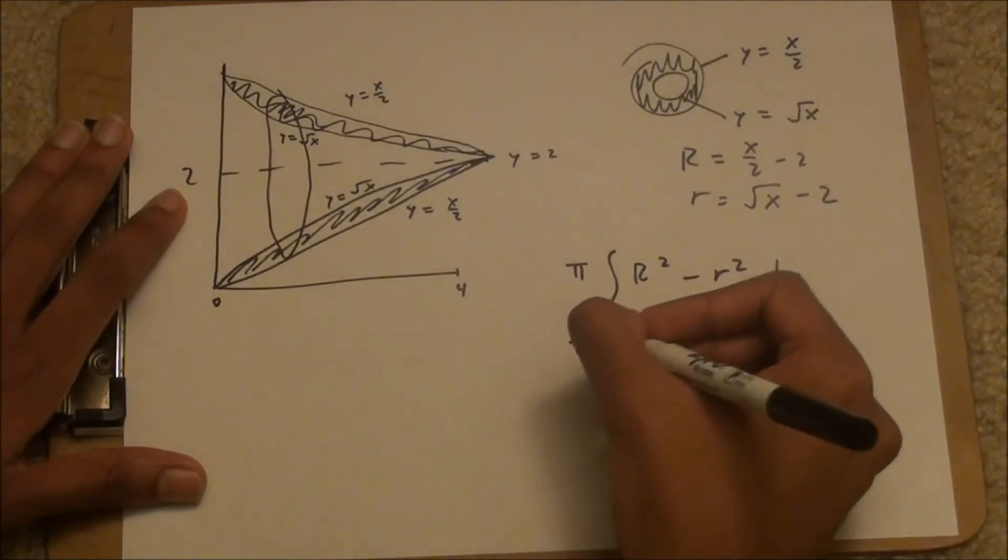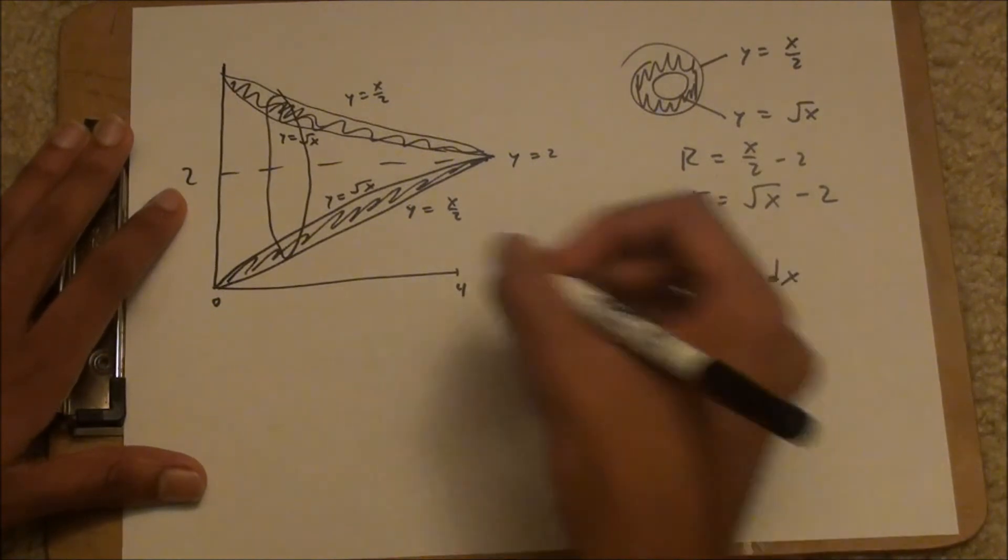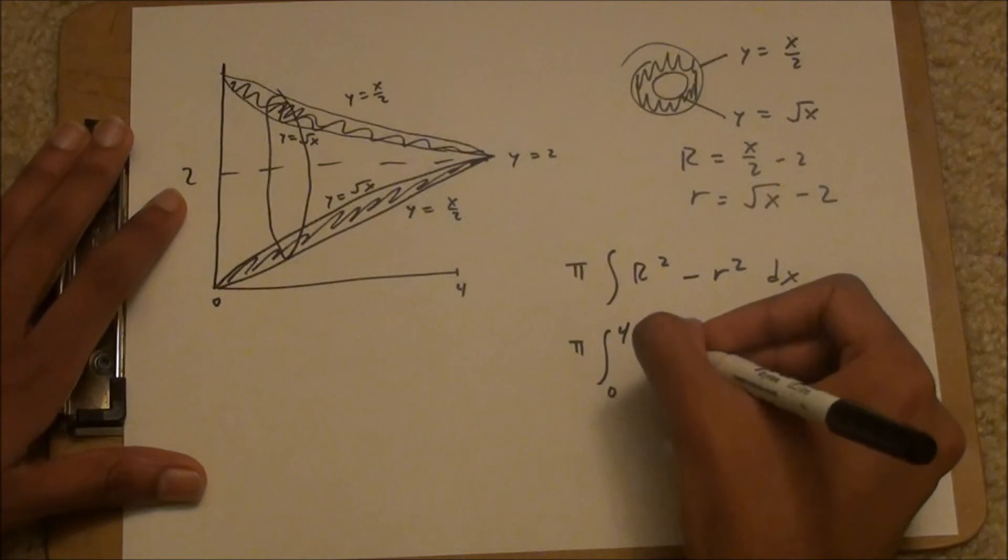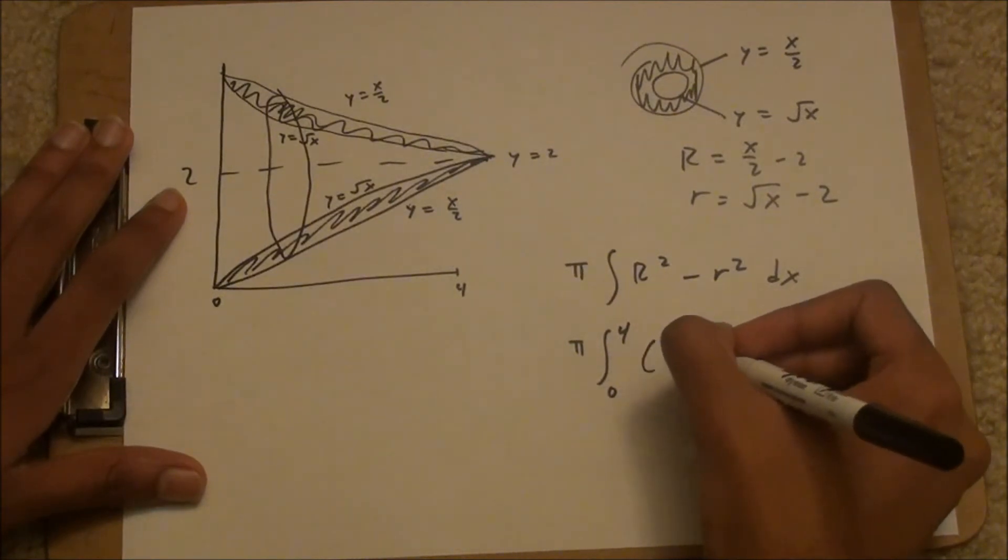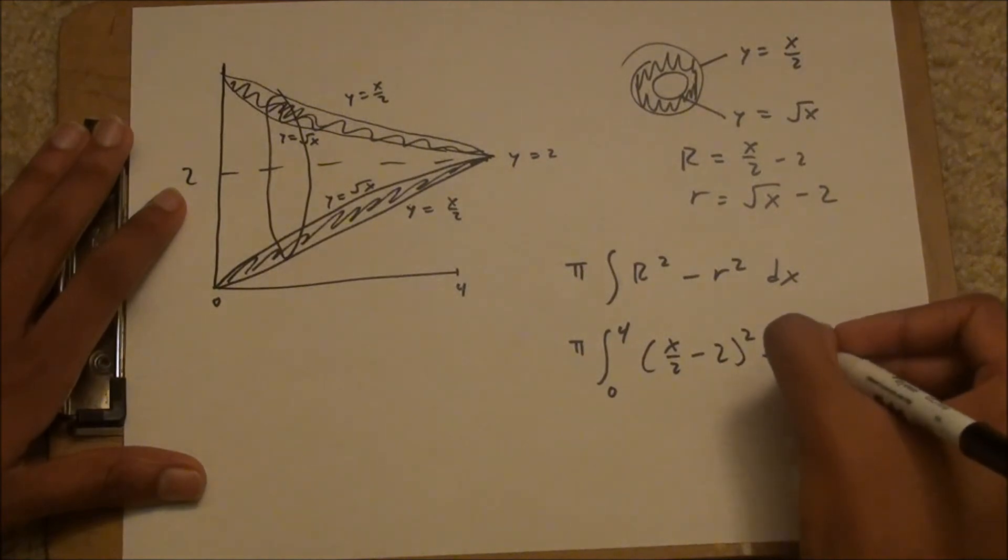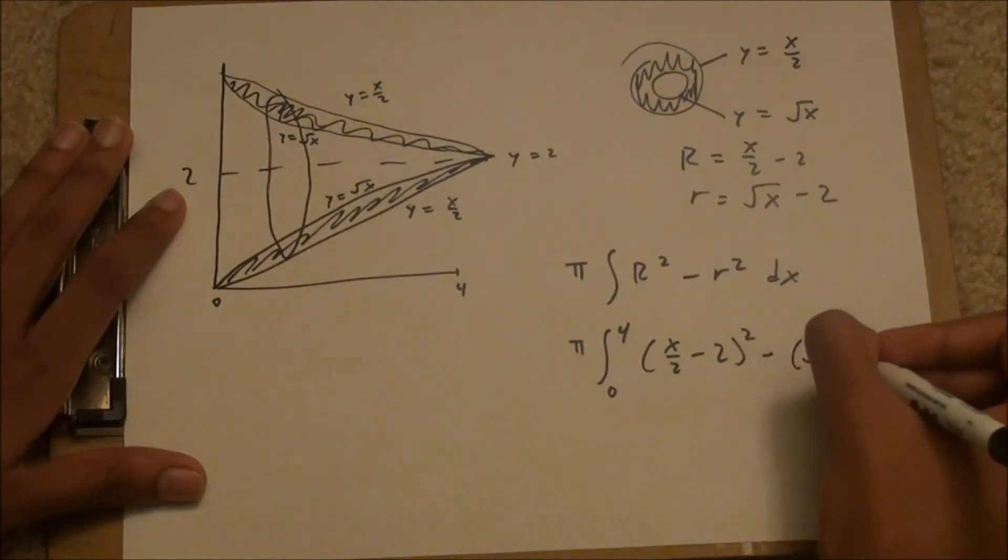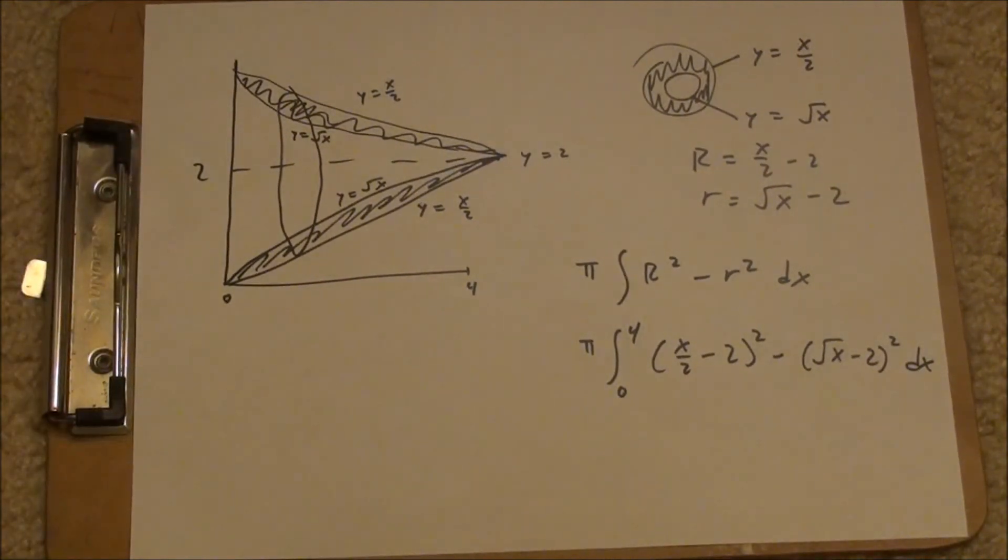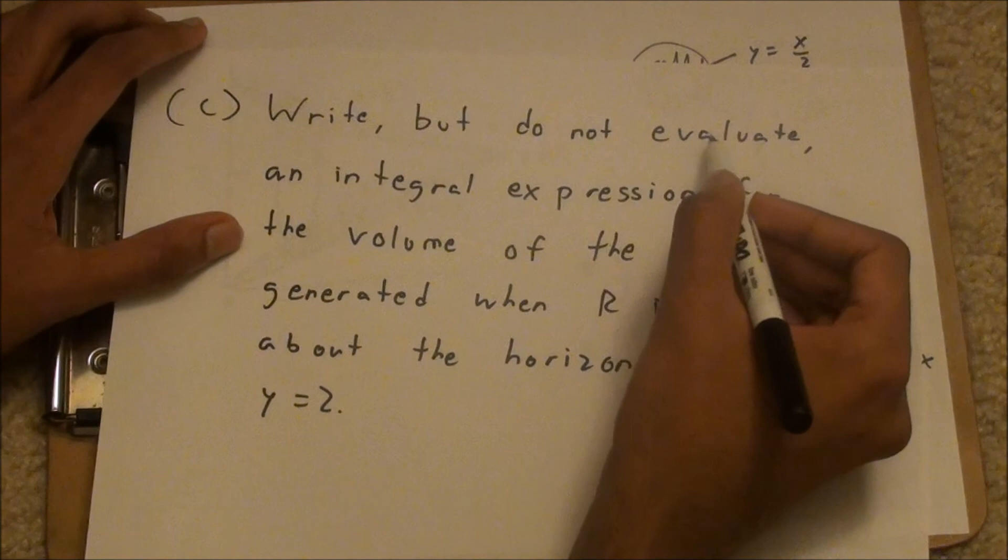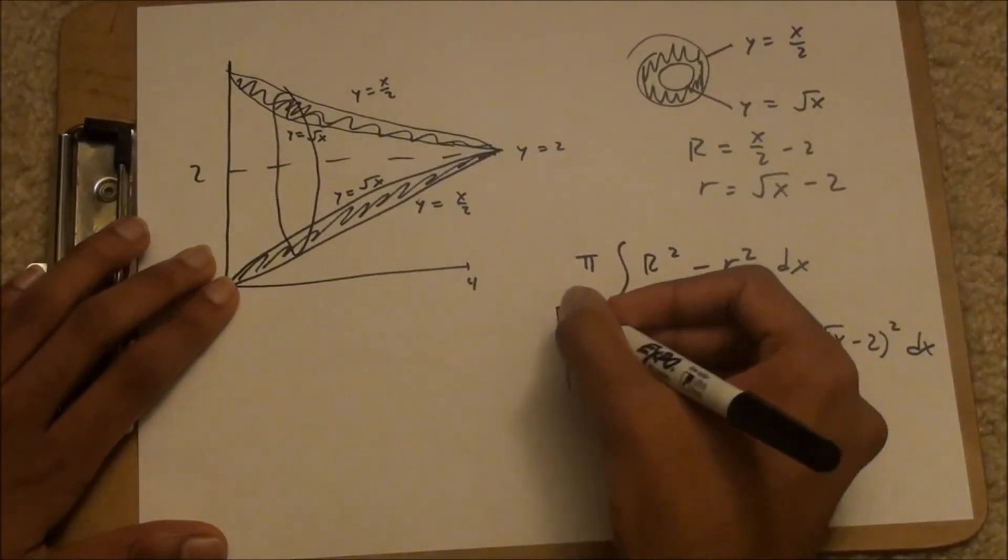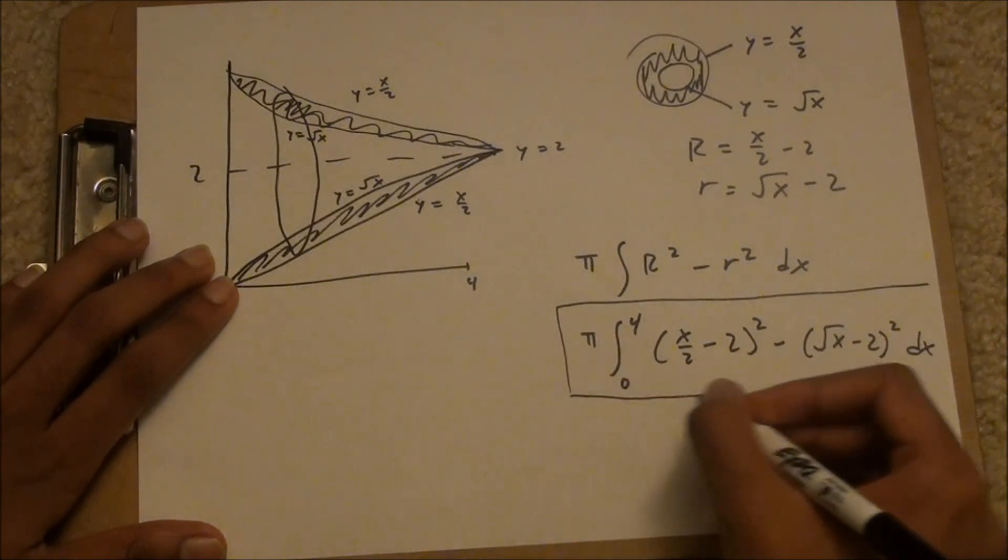And from here, you just plug your information in 0 to 4, since it's with respect to x again. x over 2 minus 2 squared, minus the square root of x minus 2 squared dx. And since they just said write, but do not evaluate the integral, we can stop right here.